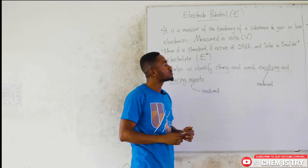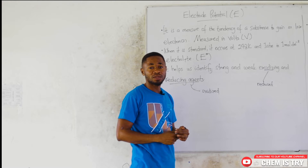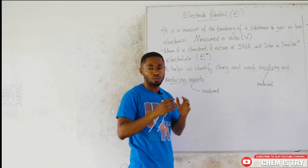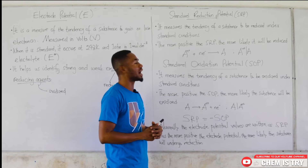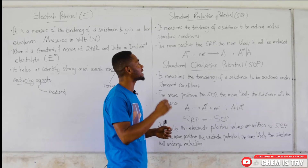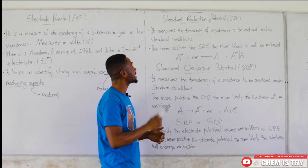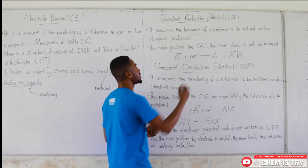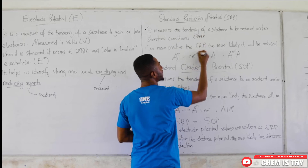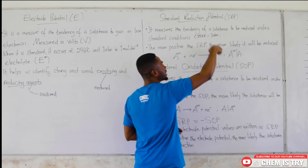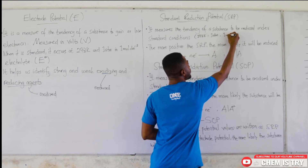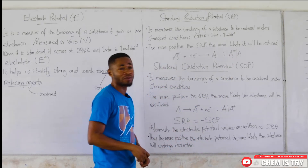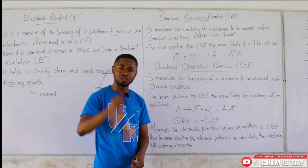The electrode potential values are very important in chemistry and they are divided into two. We have the standard reduction potential and the standard oxidation potential. The standard reduction potential is normally abbreviated as SRP. It measures the tendency of a substance to be reduced under standard conditions. The standard conditions are 298 Kelvin temperature, 1 atm pressure, and the concentration of the electrolyte is 1 mol per decimeter cube. The more positive the standard reduction potential value, the more likely the substance will be reduced.